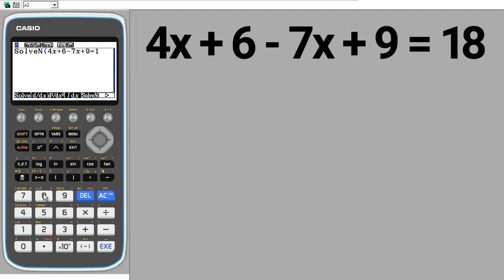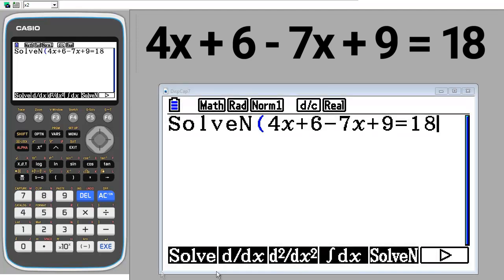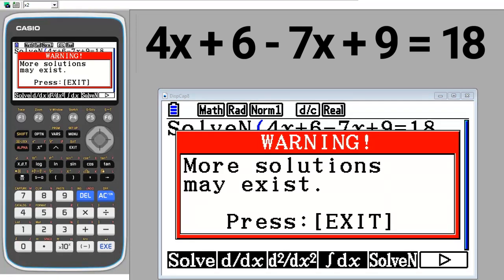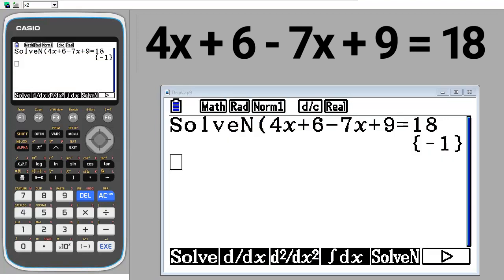You don't have to close the parenthesis on this problem, but you can if you want. To get the answer, press the EXE button. After you press the EXE button, this red warning message always appears when we are solving these type of problems in this way. Don't worry about it, press the EXE button to make this message go away. After you make that message go away, the answer pops up here. The answer is x equals a negative 1.